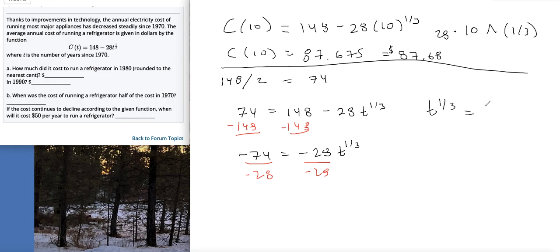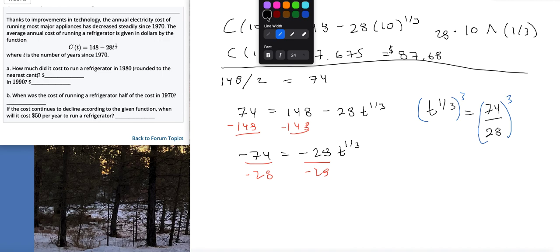Double negative, so that's going to be positive 74 over 28. Now I have a root, and remember to undo roots we use powers. Since this is like a cube root, I'll raise both sides to the third, because 3 times one-third would make that t to the first, which is what we're trying to get to. So now we have t equals...